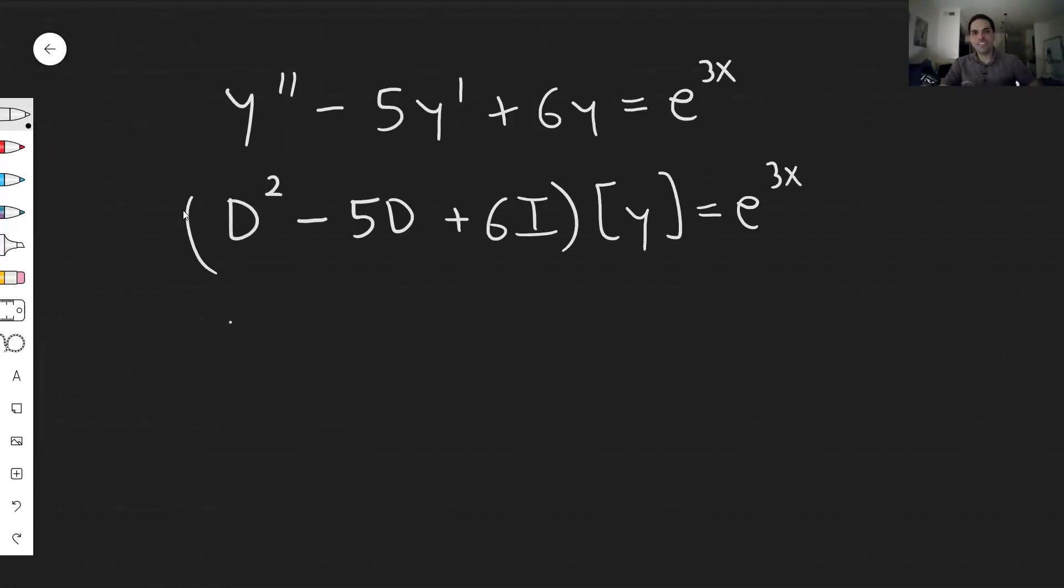What does this gibberish mean? D^2[y] just means differentiate y twice, so y''. D[y] means differentiate y once, so -5y'. And I just means do nothing, just the identity. So if you use those definitions, then those two things say the same thing. But the awesome thing here is, this expression you can actually factor out.